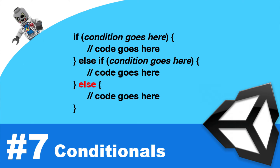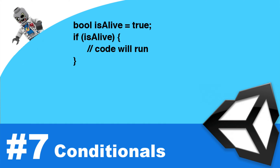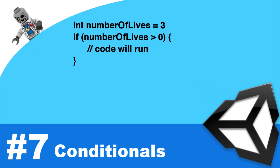Now let's return to the actual condition. As I mentioned, the condition must evaluate to a true or false value. The first way we can do this is by using a Boolean value directly. Let's imagine we had a Boolean value called `isAlive` — we could simply put that within the parentheses. You can also write an expression, such as checking if the number of lives is greater than zero using a greater-than sign. This will evaluate to a true or false condition. You can use a less-than sign as well.